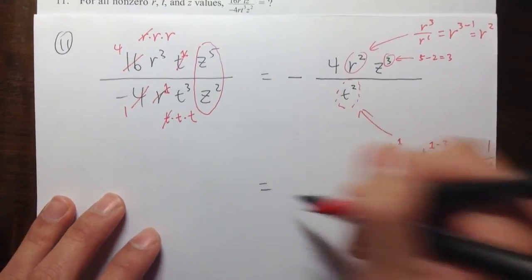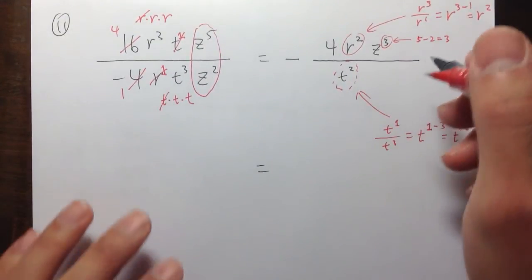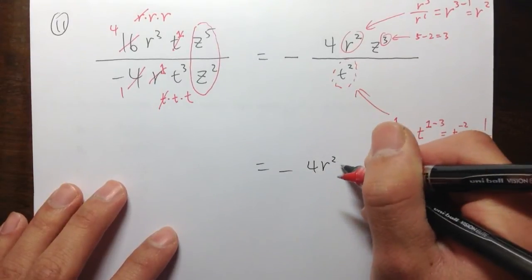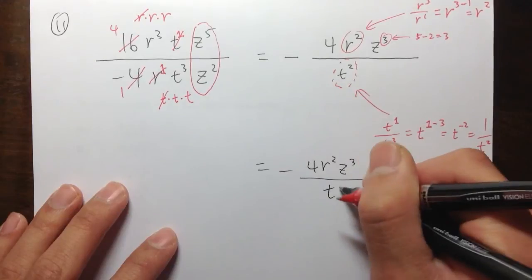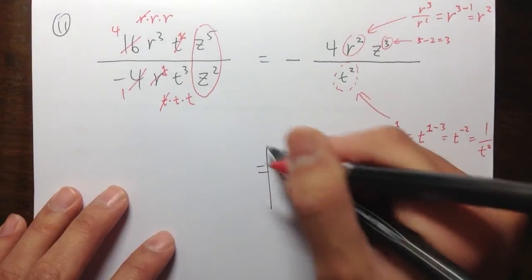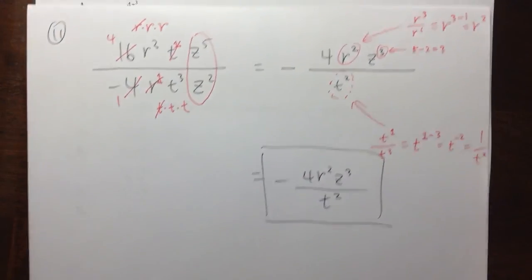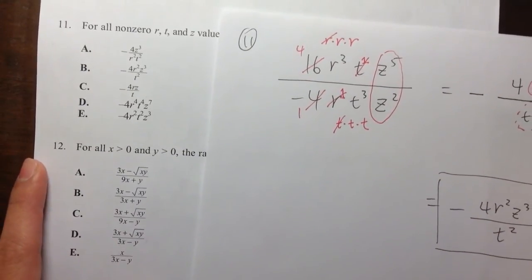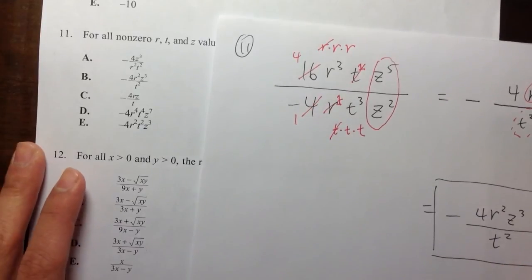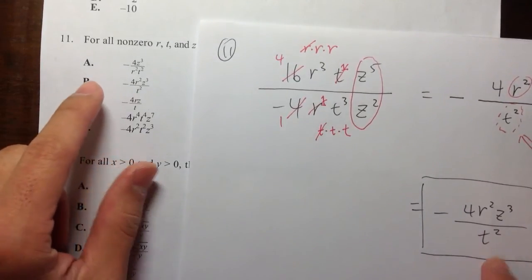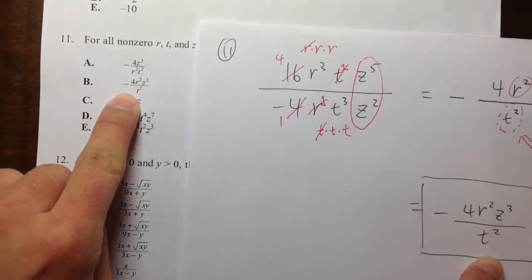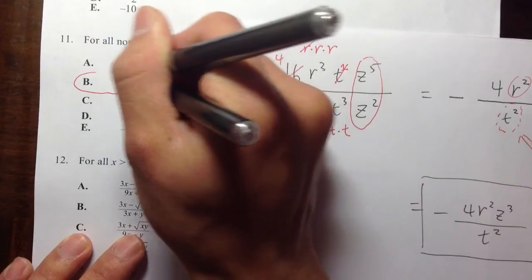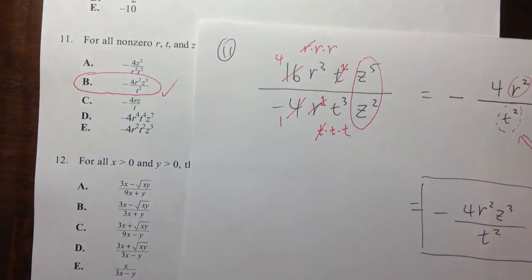So let me rewrite the answer in a better form. So all this, it's negative 4 r squared z to the third power over t to the second power. And let me take a look of what we have. What's our choices? I have the t to the second power on the bottom. So that's choice B. That's answer choice B. So box my answer or fill in the select answer. That's it.